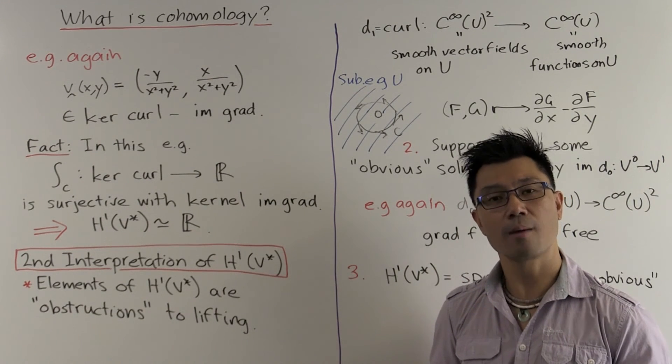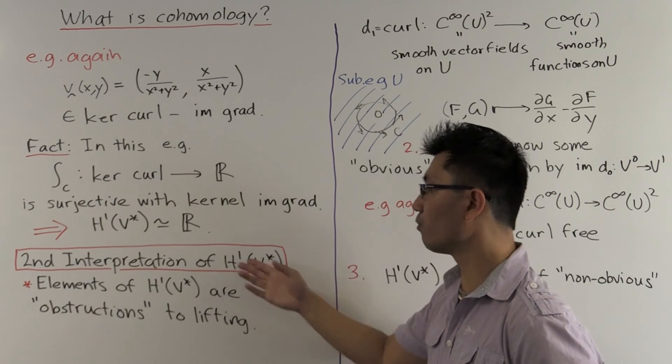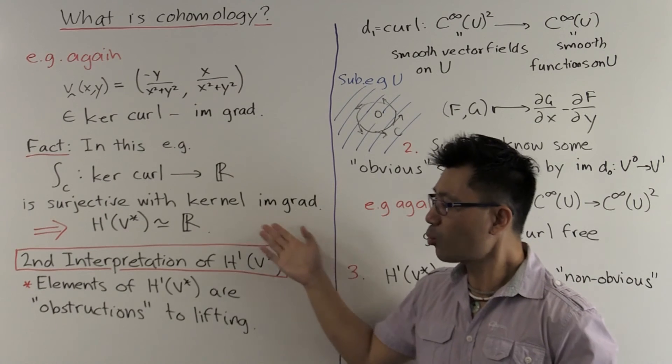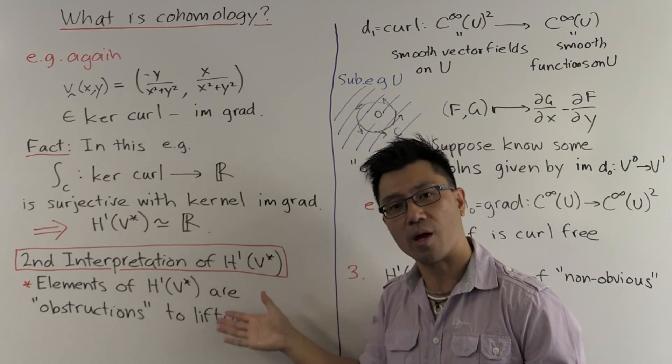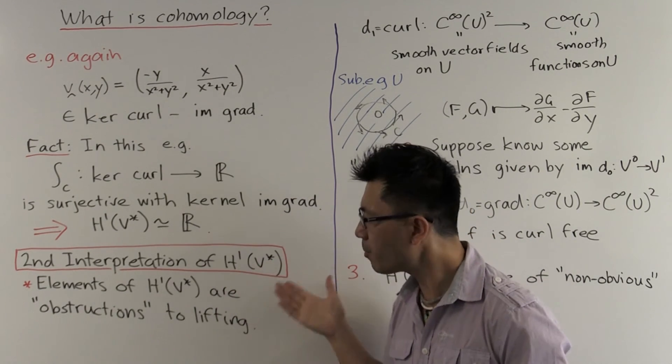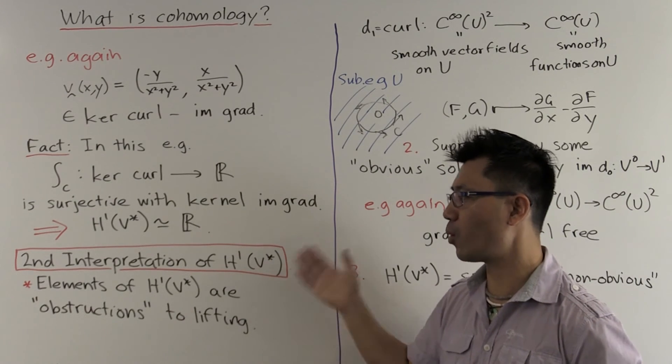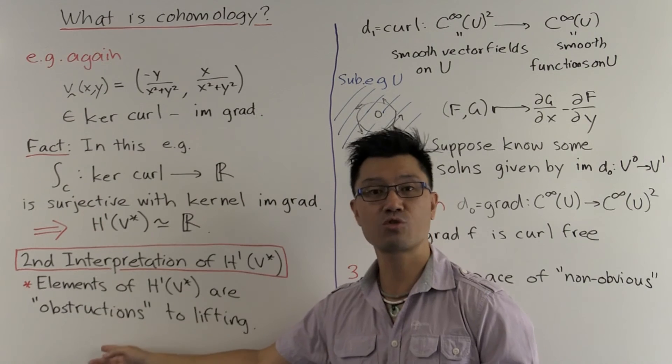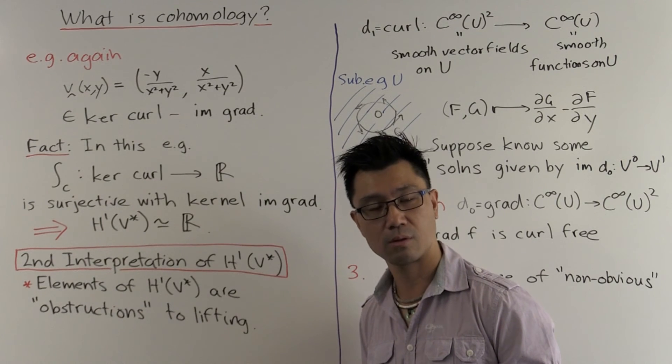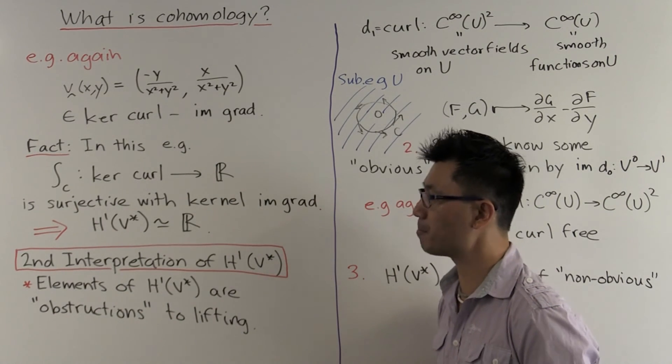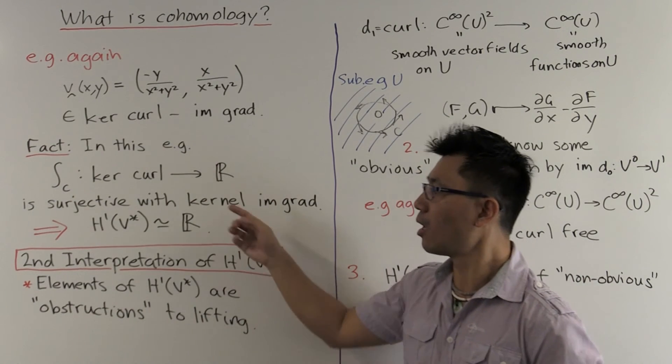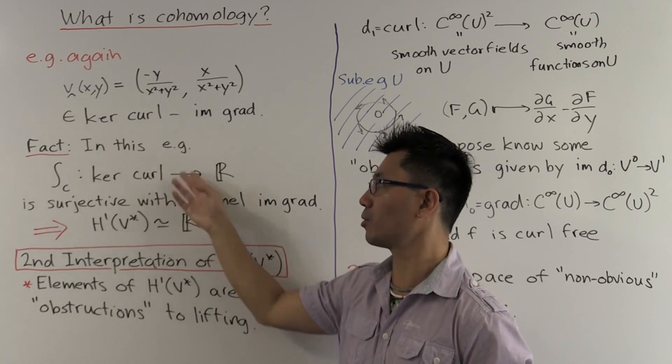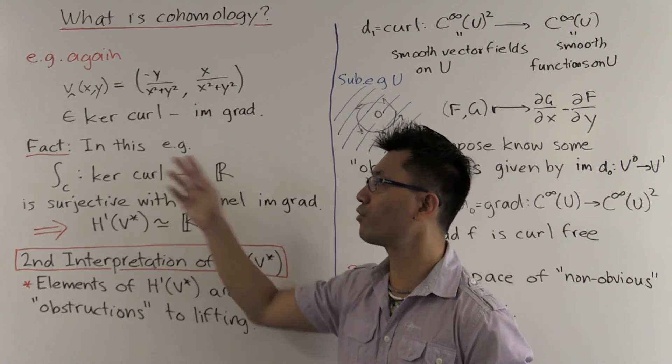So that comes to the second interpretation for this H1 V star. And this is the one which you can use almost everywhere. This is the stereotypical way of thinking about H1. Elements of H1 V star are just obstructions to lifting. So what do we mean by that? Suppose we have something which is in this kernel here, so a curl-free vector field.